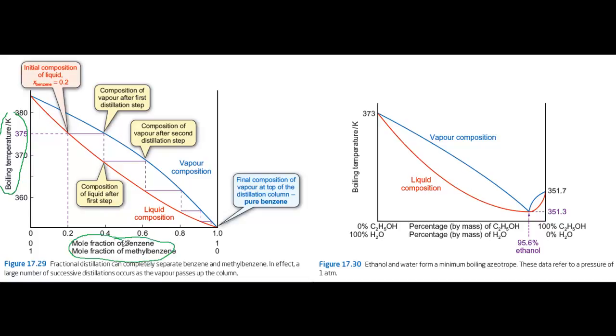This particular example is for mixtures of benzene and methylbenzene. These are two chemically similar liquids, so their behaviour is reasonably ideal. The composition axis has the mole fraction of benzene increasing from left to right. And notice that because benzene is more volatile than methylbenzene, its boiling point is lower.